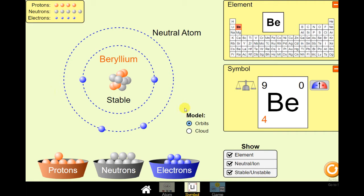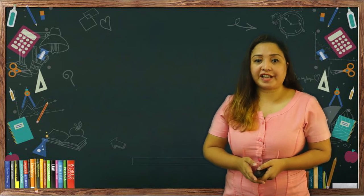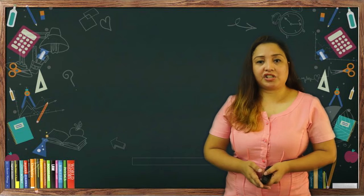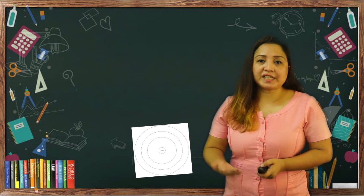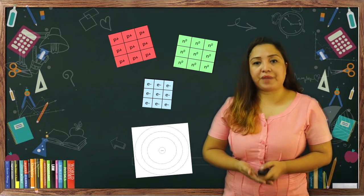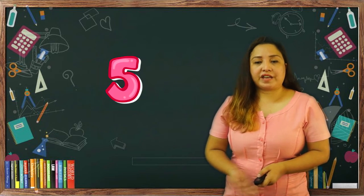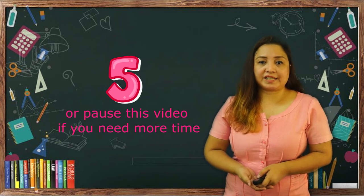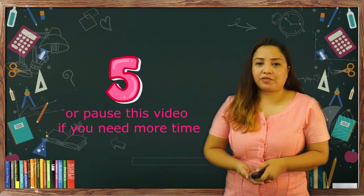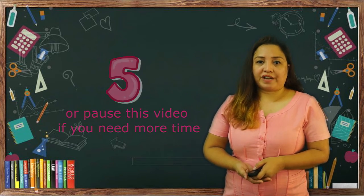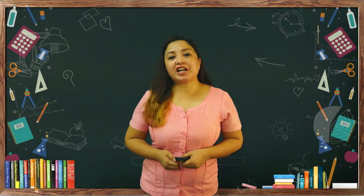Please continue with this for elements 6 to 10 for your activity. For those who have no internet access, you are going to make use of a paper model of an atom using the activity sheet given to you with Bohr's template and small square pieces of paper to represent your subatomic particles. You will be given 5 minutes to finish this activity. If you need more time, pause this video and restart it when you are ready. Time starts now.